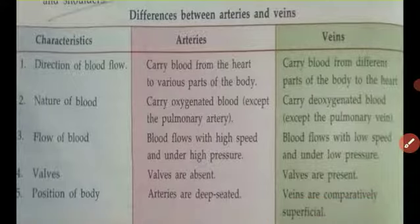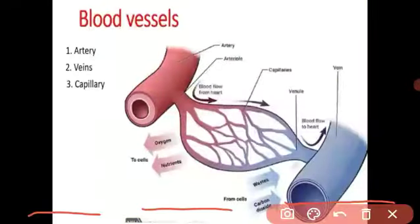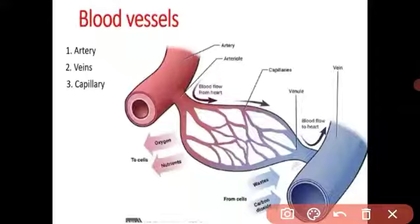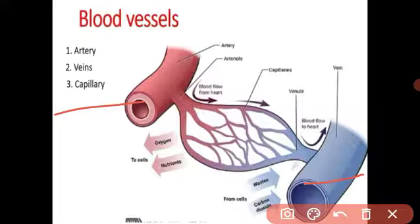Capillaries are the very finest blood vessels. These blood vessels interconnect the arteries and veins. They are the principal site where exchange of water, oxygen, carbon dioxide, and many other nutrients between the blood and body tissue takes place. Capillaries are made from a single layer of squamous epithelium.